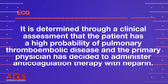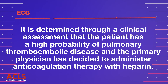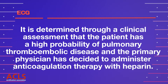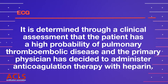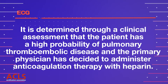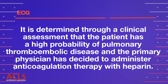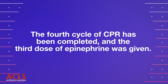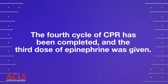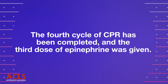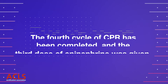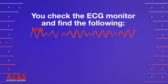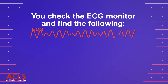It is determined through clinical assessment that the patient has a high probability of pulmonary thromboembolic disease, and the primary physician has decided to administer anticoagulation therapy. The fourth cycle of CPR has been completed and the third dose of epinephrine was given. You check the ECG monitor and find the following.